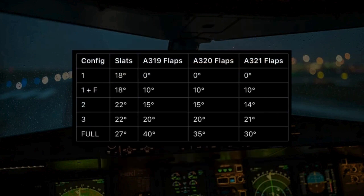In the A320 family, the slats maintain a consistent angle across all variants, ensuring uniform airflow control over the wing's leading edge. However, the flap angles vary between variants, allowing each aircraft to optimize lift and drag differently based on its unique weight and performance characteristics.